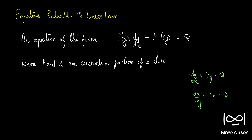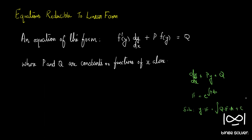We discussed these two standard forms. For the first form the integrating factor was e raised to integral of P dx, and the solution was given by y multiplied by the integrating factor equals integral of Q multiplied by the integrating factor dx, plus c.